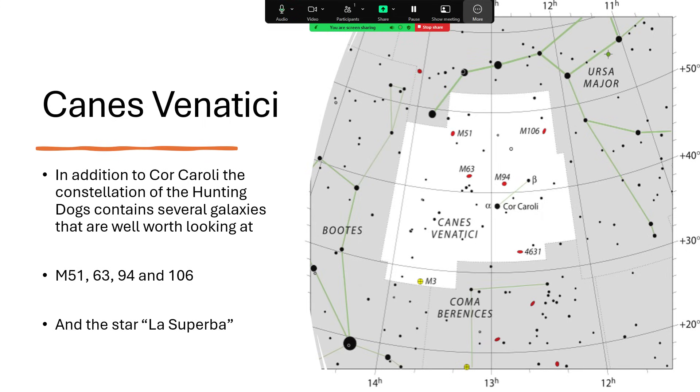In addition to Cor Caroli in this region of the sky, it's well worth exploring because you can see marked on the map here four prominent galaxies, M51, 63, 94, and 106. You can use Cor Caroli as a little bit of a signpost, or indeed a line between Cor Caroli and the star at the tip of the tail of the Great Bear to give you a guide to M51 and M63. Also, we shall come on to the star La Superba.